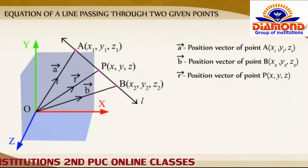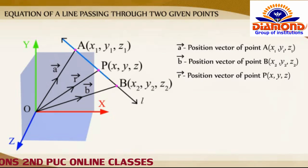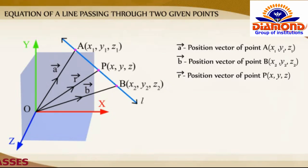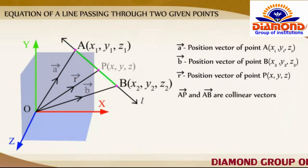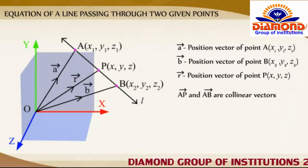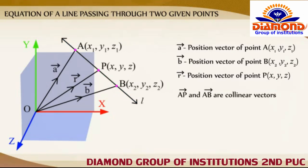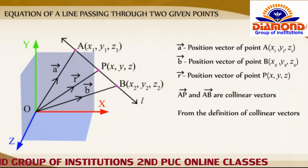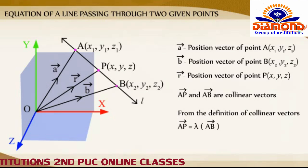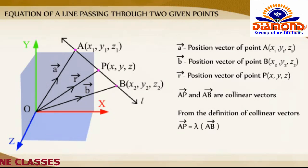It's clear that A, P, and B are the points lying on the line, so AP and AB are collinear vectors. Therefore, from the definition of collinear vectors, vector AP is equal to lambda times vector AB, for some lambda belonging to the real numbers.